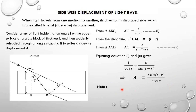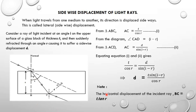We also need to note that we have displacement BC, which is called the horizontal displacement. To get BC: BC is opposite and T is adjacent, so we use tan. Tan R equals BC over T, and therefore BC equals T times tan R. That is how we get BC as T·tan R.